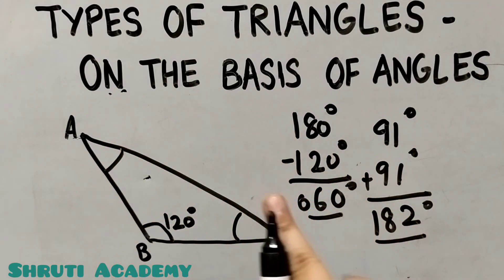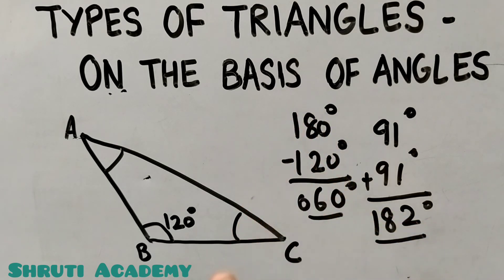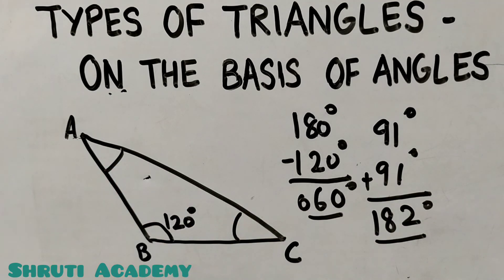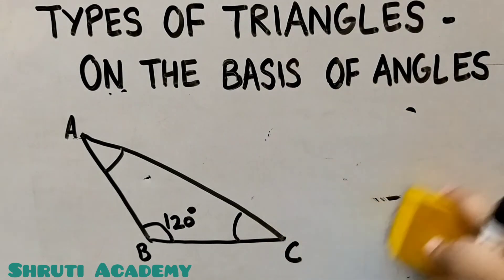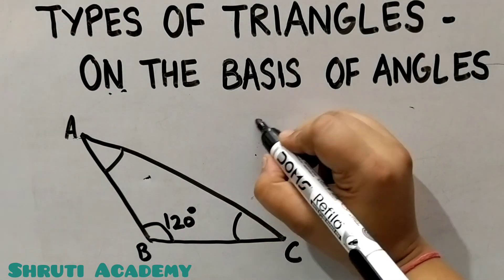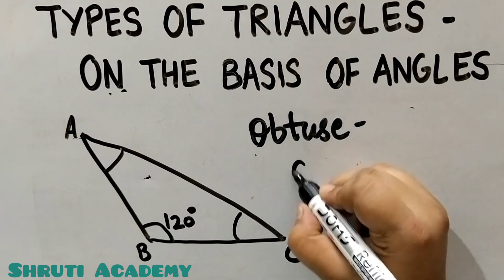Since all angles of a triangle sum to 180 degrees, if one angle is obtuse, the other two must be acute. So this triangle is called an Obtuse Angle Triangle.